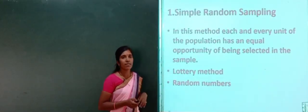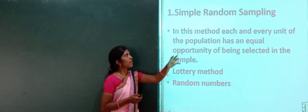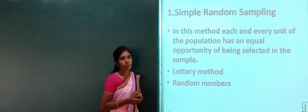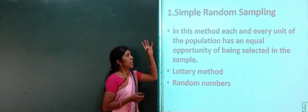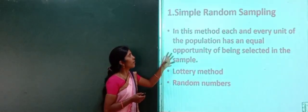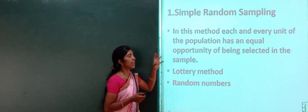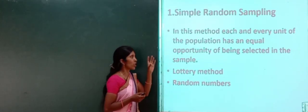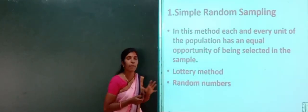The first one is simple random sampling. In this method, each and every unit of the population has an equal opportunity of being selected in the sample.